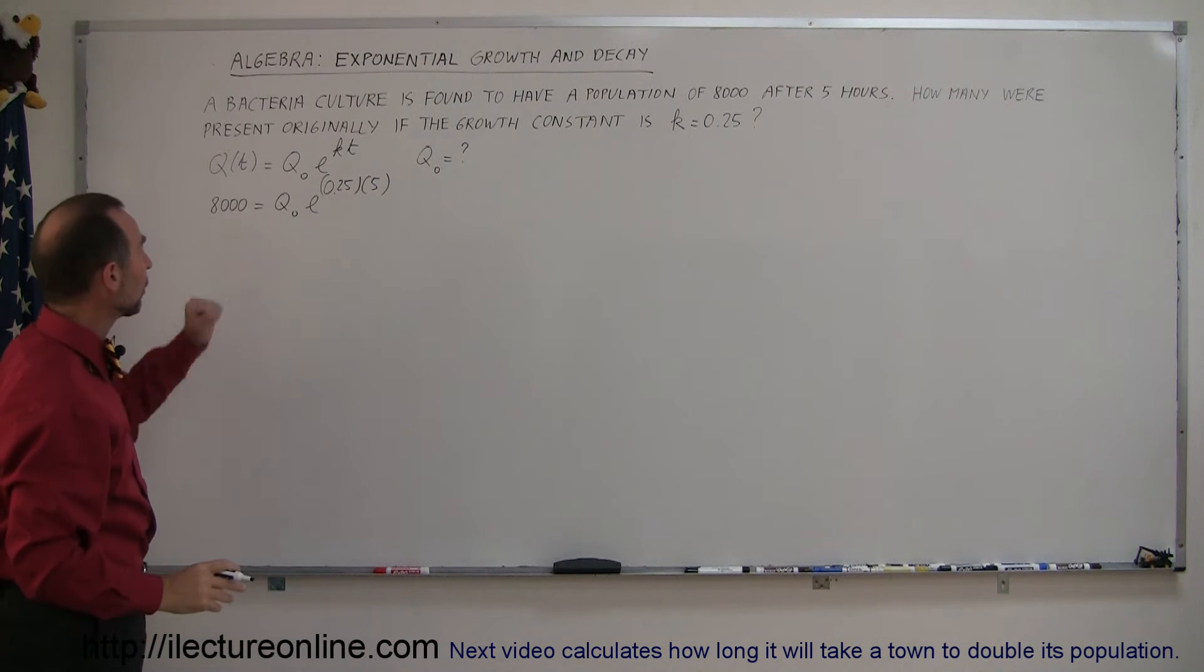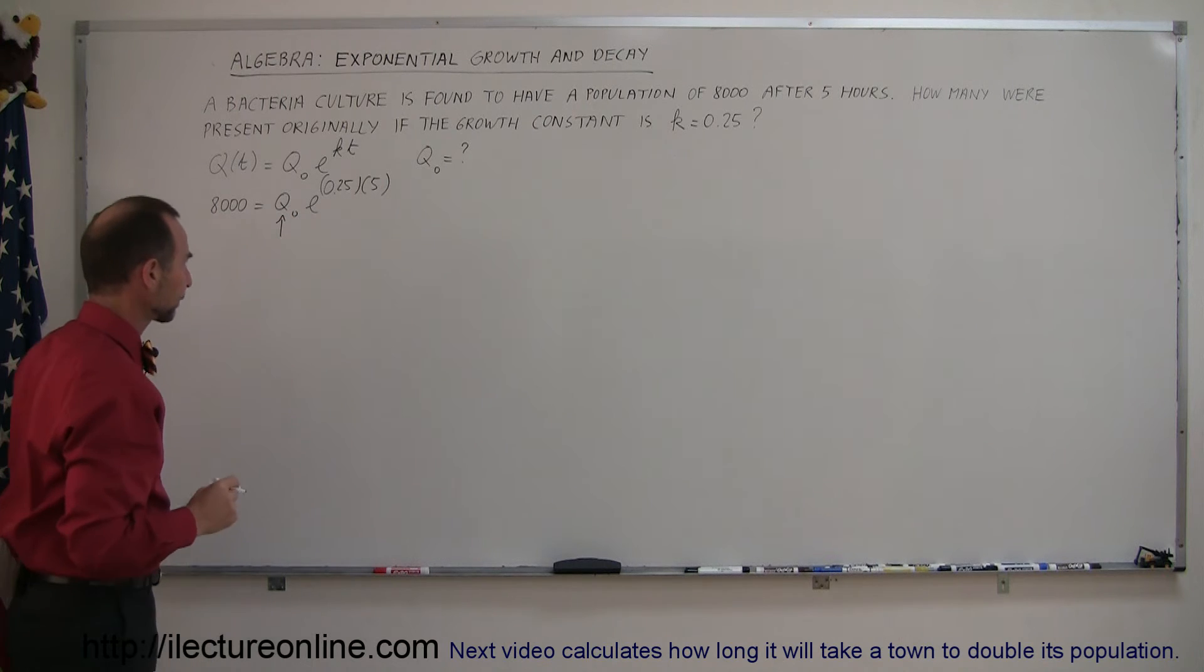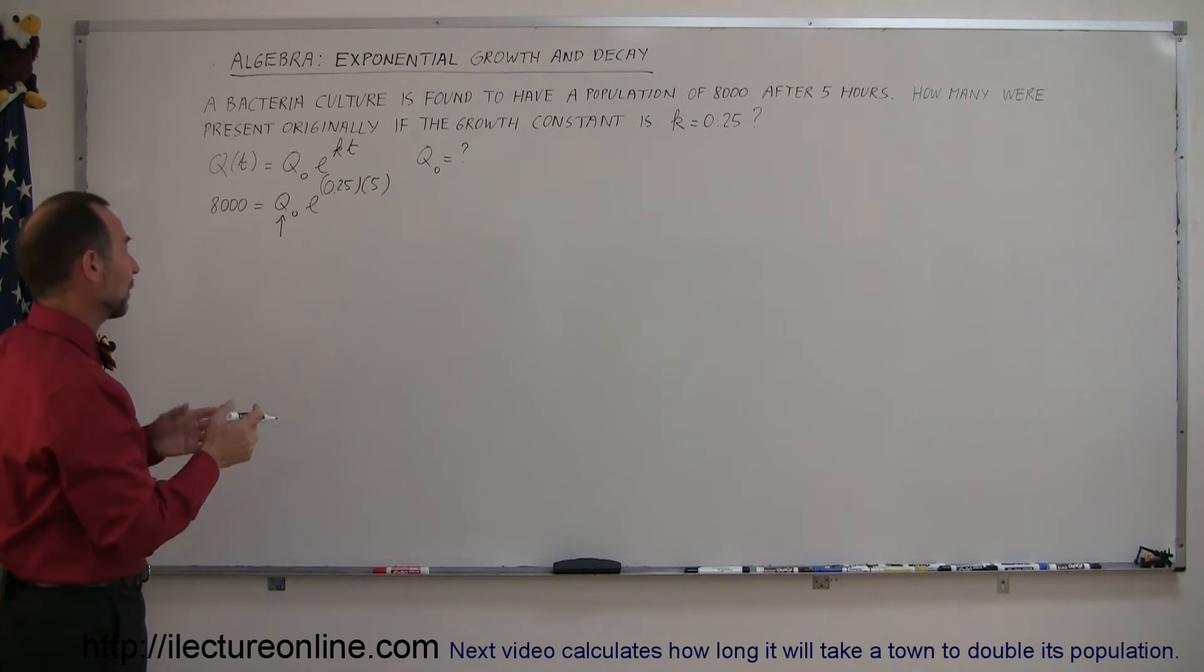So we plug in all the values that we know into the equation and we know we're now looking for this value right here. So how do we do that? Well we have to isolate it, so we're going to flip the equation around.